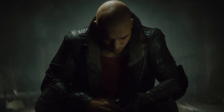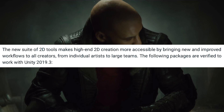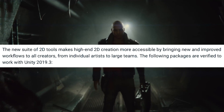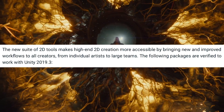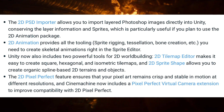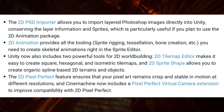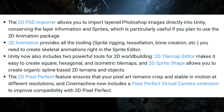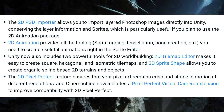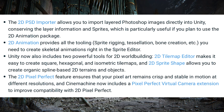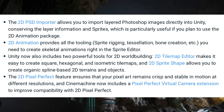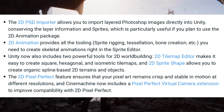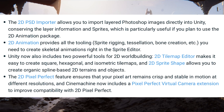Now for 2D tools. The new suite of 2D tools makes high-end 2D creation more accessible. The 2D PSD Importer allows you to import layered Photoshop images directly into Unity, preserving layer information and sprites — particularly useful with the 2D Animation package. 2D Animation provides sprite rigging, tessellation and bone creation to create skeletal animations in the sprite editor. Unity also includes the 2D Tilemap Editor for square, hexagonal and isometric tilemaps, and the 2D Sprite Shape for organic spline-based 2D terrains and objects.